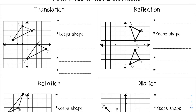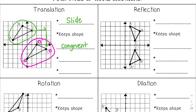There are four types of transformations. The first one is a translation, or another word for that is a slide. This would be my pre-image, and this would be my image because it has the prime symbols. A translation will just slide a shape across the graph — it's not going to change the direction or the way it's facing. It will just be in a different location on the graph. A translation will always keep the shape congruent — same shape and same size. It is one of the rigid transformations, which keeps the shape congruent, and another word for rigid transformations is isometries.